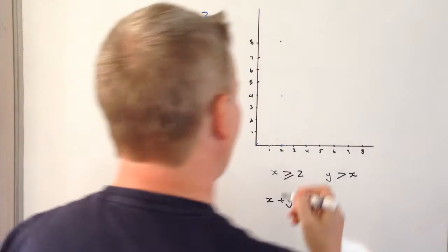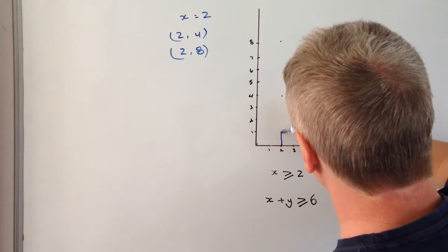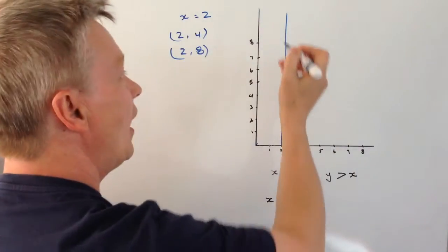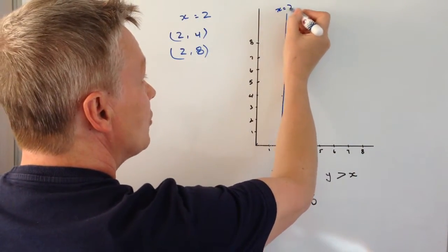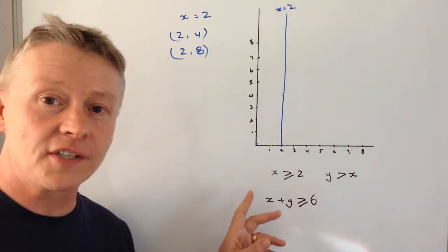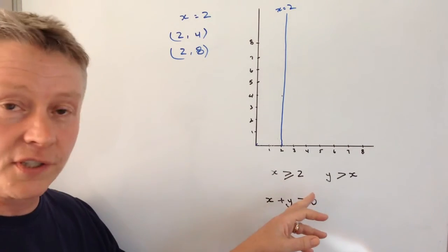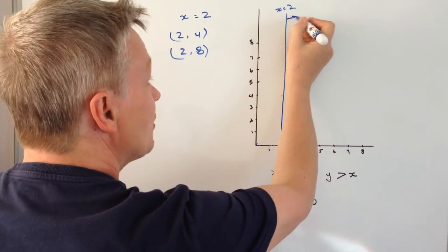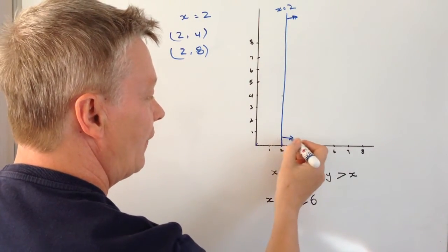I'm going to turn my back to the camera. So we'll just draw that like that. And this line is where x equals 2. And I know that it's going to be greater or equals 2, so therefore the inequality is going to be towards the right hand side. So I've put little arrows along like that.